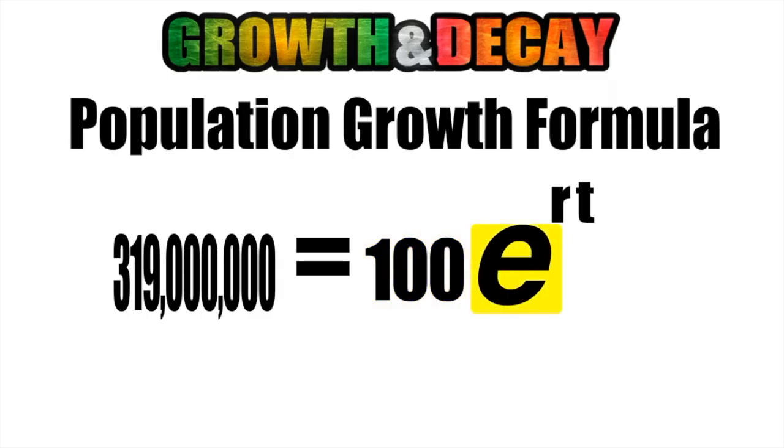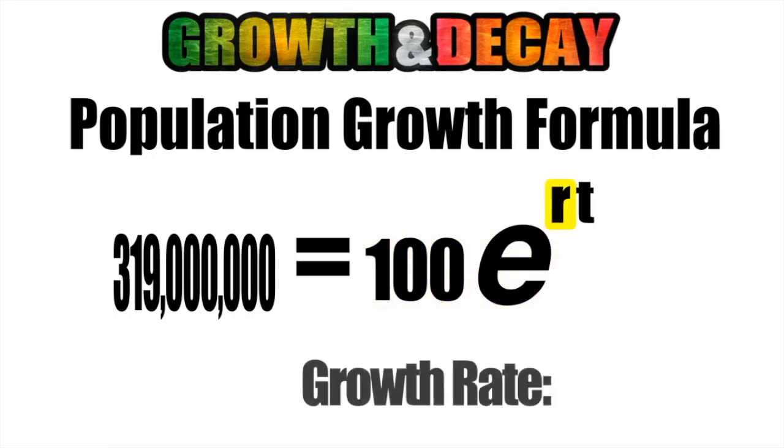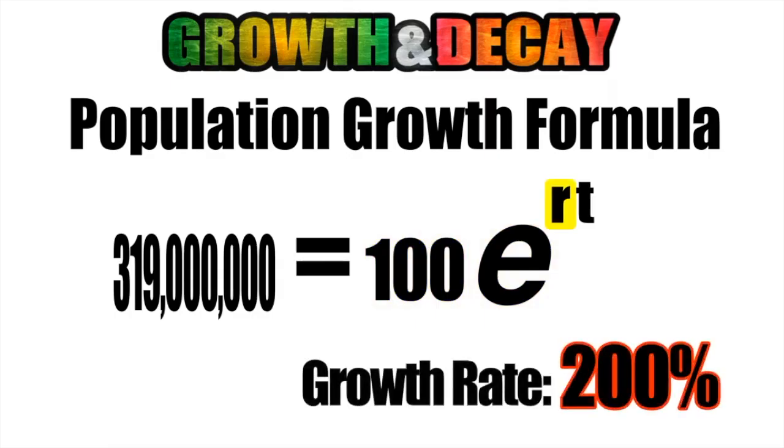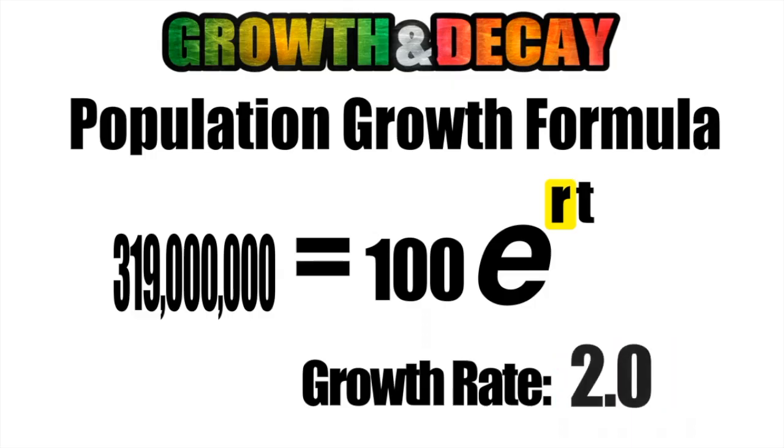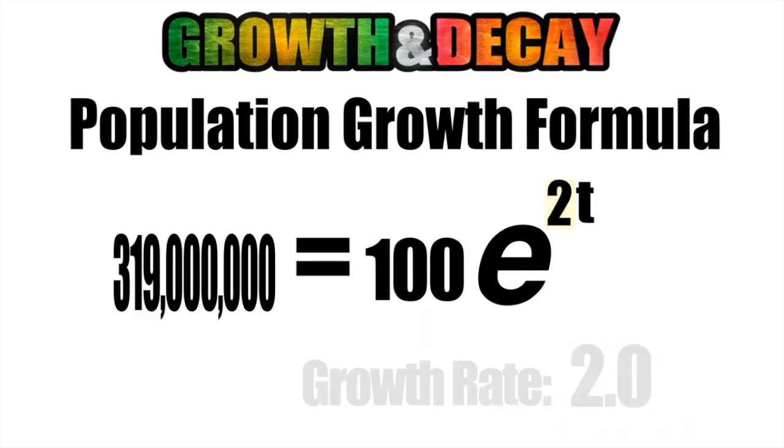Now, e represents the exponential function, and we're not going to change that. Our growth rate has been approximately double each encounter. So we are going to use 200% or as a decimal, just 2.0.